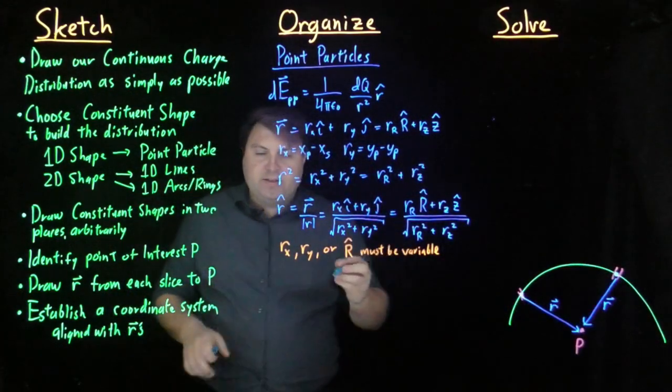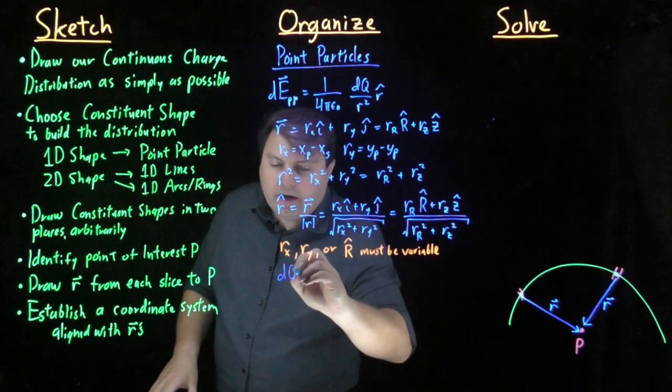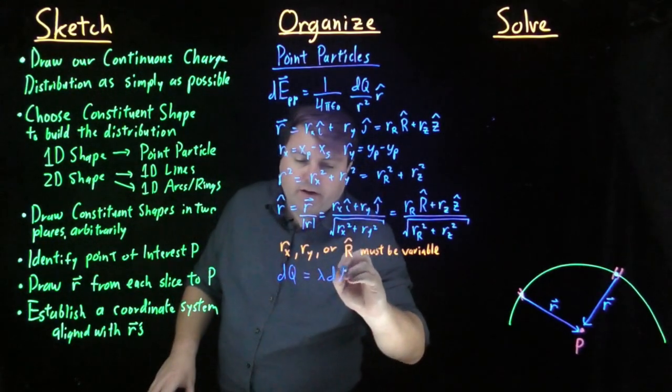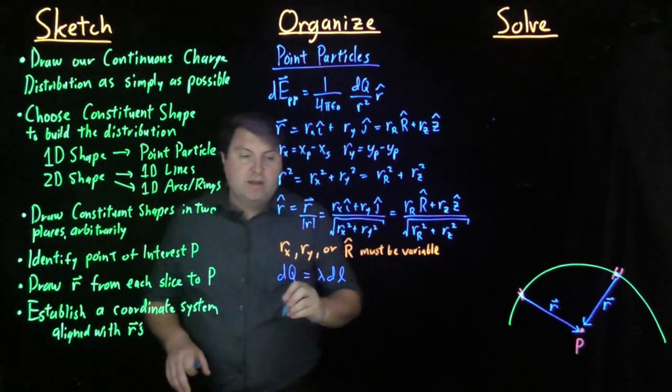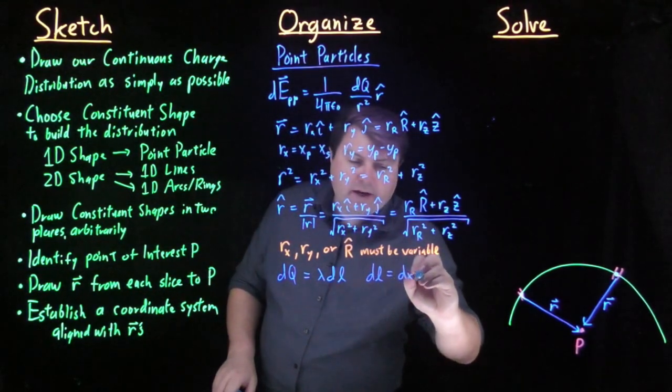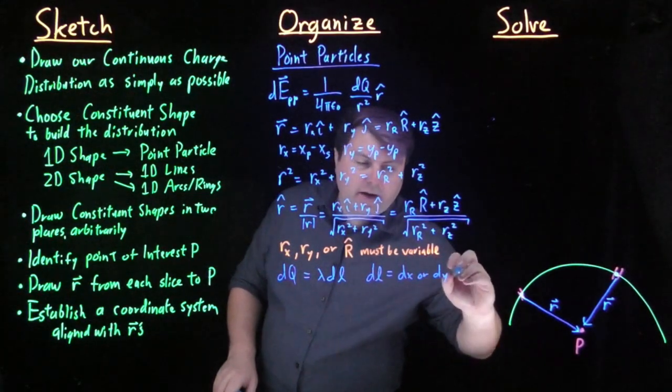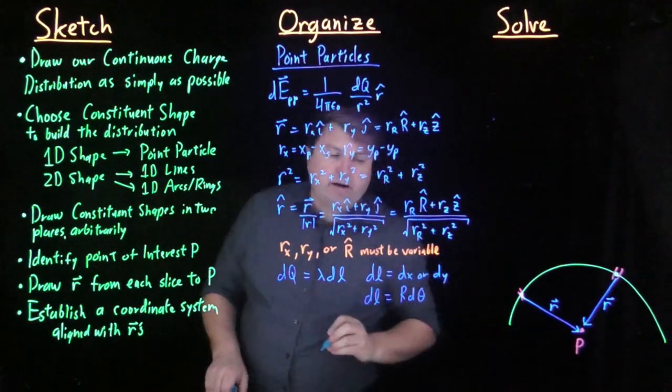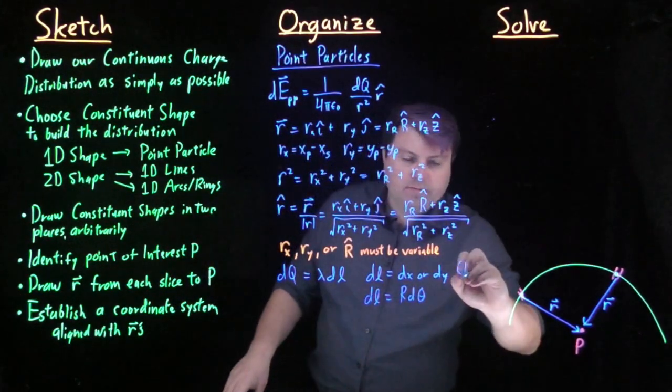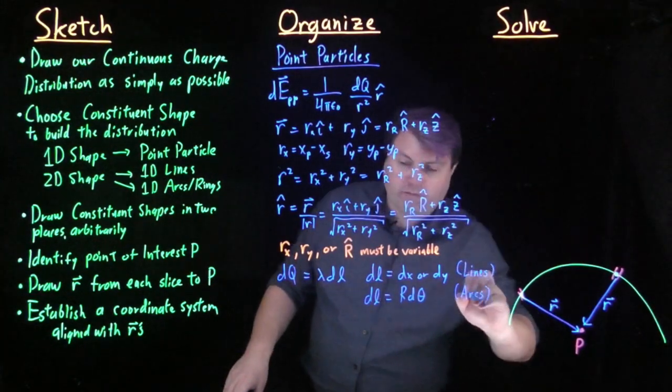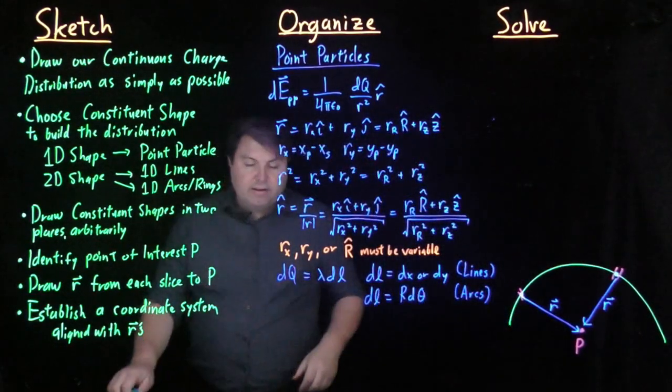All that we have left is dq. If we're in a point particle, our dq is going to be equal to lambda dl. Our dl is equal to dx or dy for straight lines, or our dl is equal to r d theta for arcs.